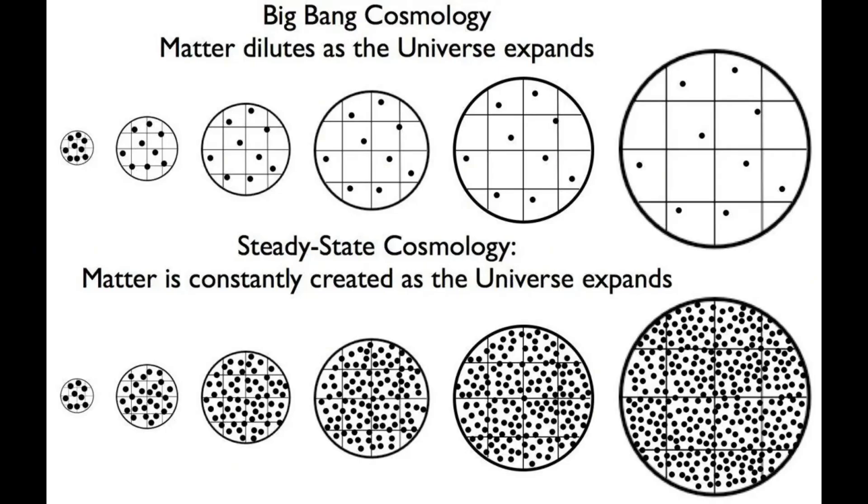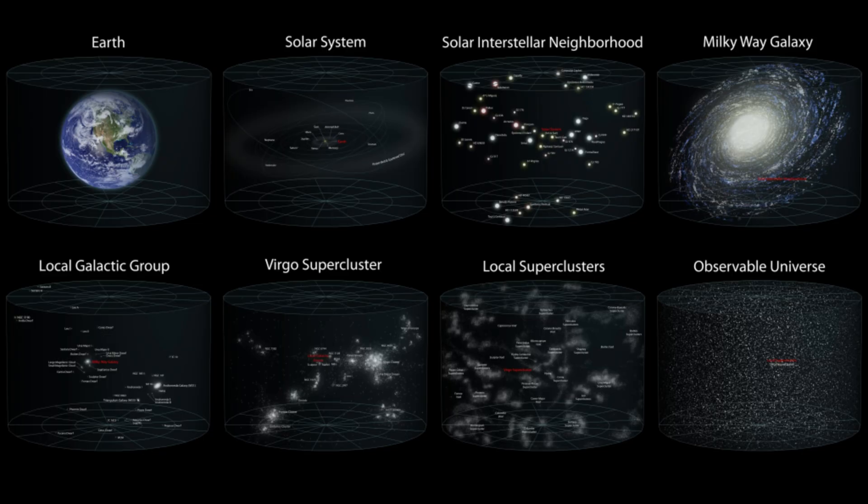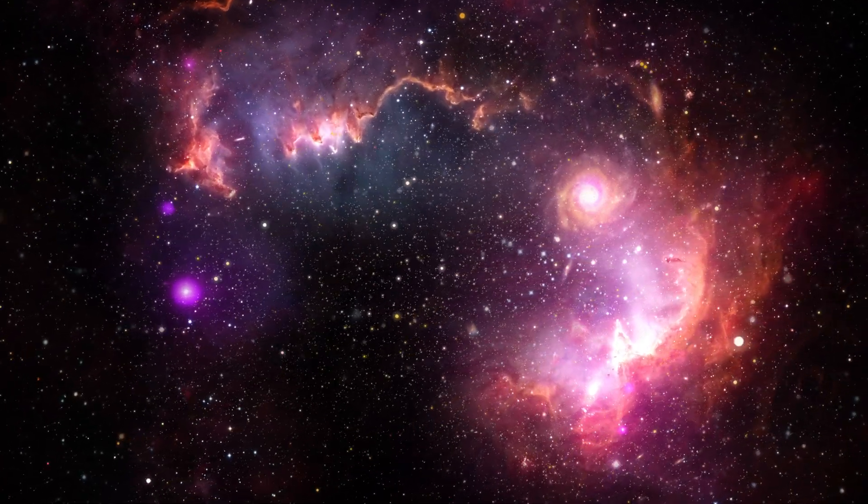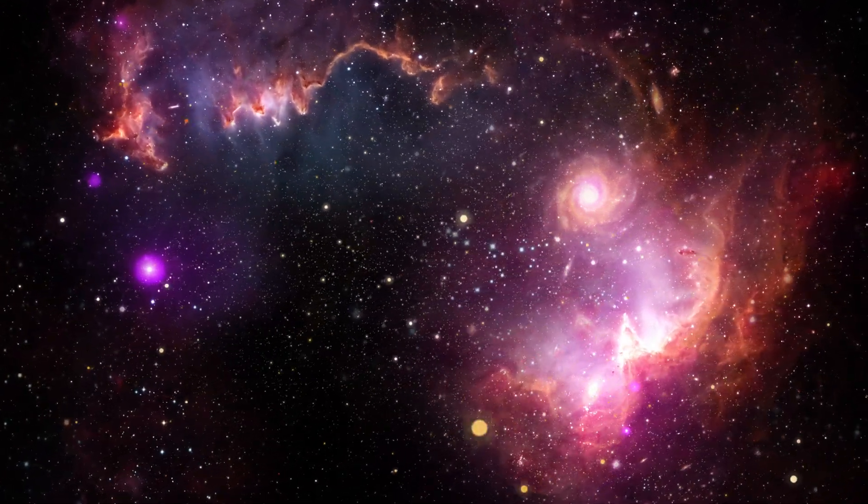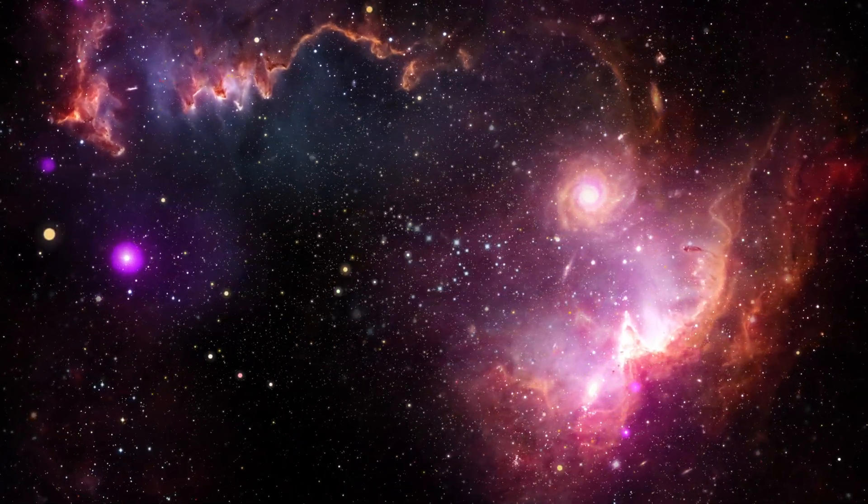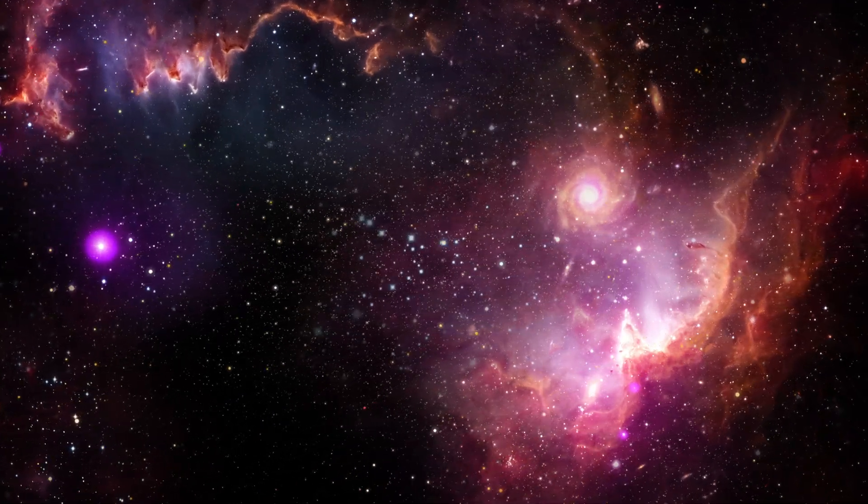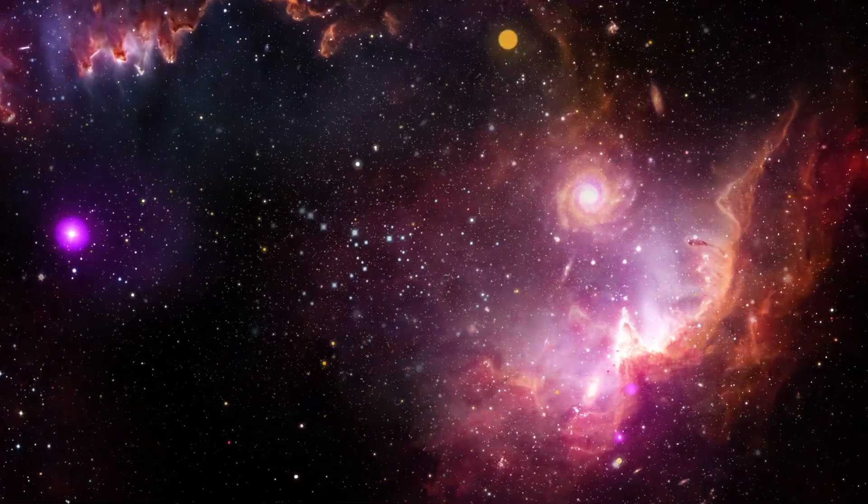This principle is the foundation of modern astronomy. It states that, on a large enough scale, the universe is both homogeneous and isotropic. In simpler terms, it means the universe looks the same way in every direction and has roughly the same composition everywhere, no matter where you are in it. It's like baking a cosmic cake. Sure, there might be chocolate chips or swirls here and there, but if you zoom out far enough, it all blends into one smooth batter.